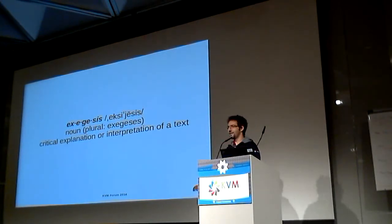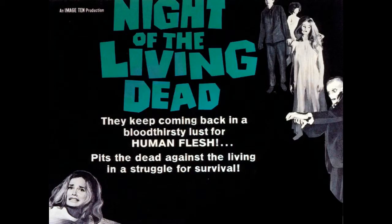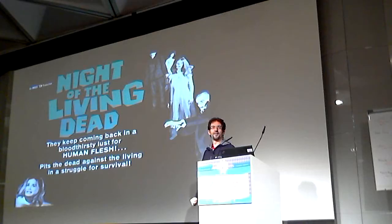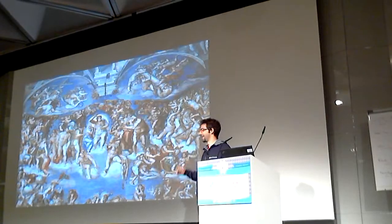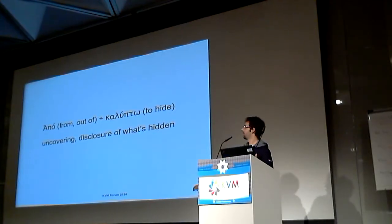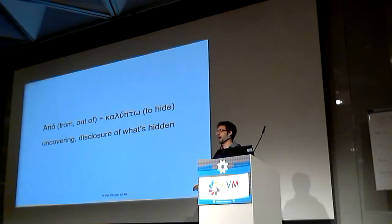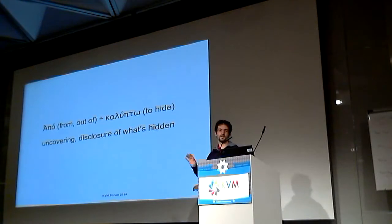The other word is apocalypse. How many of you think of zombies when you hear apocalypse? I guess all the others think of doomsday or something like that. Actually, what I meant when choosing the title of the talk is the original meaning of the word — it comes from two Greek words: one means 'out of' and the other means 'hide.' So basically, apocalypse means uncovering, disclosure of what's hidden, which has something to do with doomsday and absolutely nothing to do with zombies.